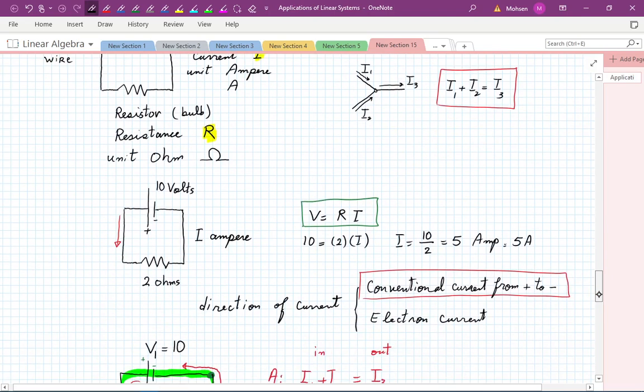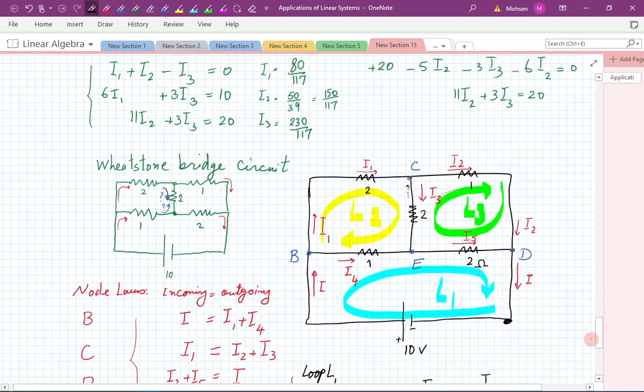We had an example last time about Wheatstone Bridge Circuit. It's a famous example you're going to see in your circuit classes. We did some of the basic work and explained how it connects to linear algebra. One of the topics that shows up in homework problems is the so-called equivalent resistance. Sometimes you have a complicated circuit attached to some battery, and the question is how can I simplify this whole picture - if I want to remove all of these resistors and just replace them with one item, one resistor.